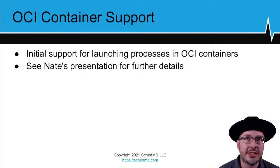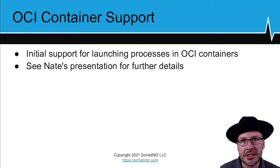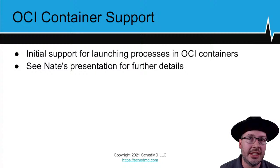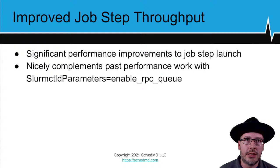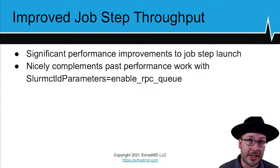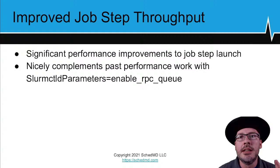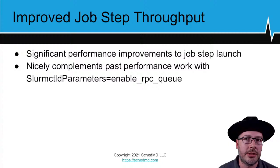OCI container support was also covered by Nate's presentation earlier today. There's initial support for launching a process inside an OCI container so that Slurm handles file system namespacing and setup without relying on external tools like Shifter or Singularity. Additionally, job step throughput for a given job is greatly increased in 2108 due to code cleanup and refactoring. This nicely complements the experimental 'enable RPC queue' option, where we've seen massive performance improvements from the refactored work alongside that RPC queueing mechanism.